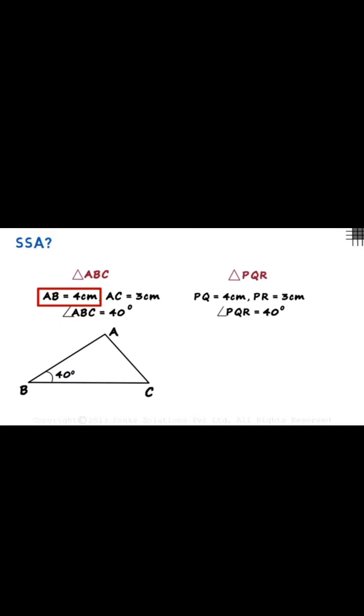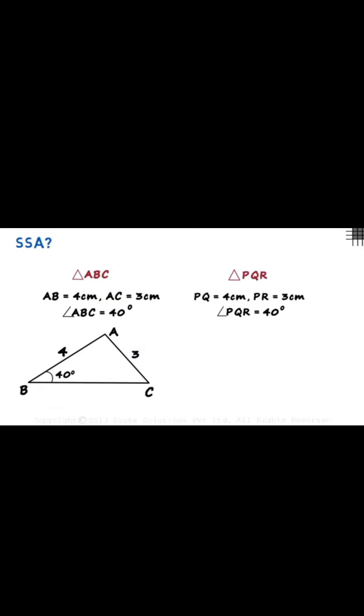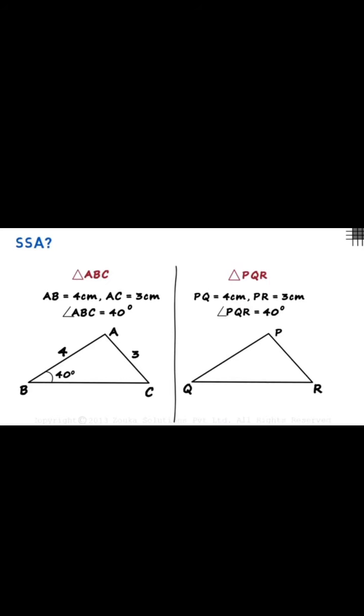If both had the included angle in the middle, that is angle A, but we are not given angle A. We are given AB = 4 cm, AC = 3 cm, and the 40 degree angle is not included in between. Now we have to draw triangle PQR. We drew it with Q at 40 degrees, PQ as 4 cm and PR as 3 cm - this one is congruent. But is it always congruent? Can we draw this triangle differently? Yes, there is another way.